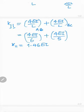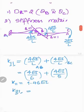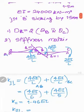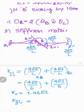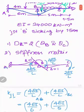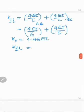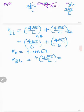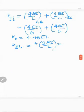K21 is the force induced at coordinate 2 when unit displacement is at coordinate 1. Coordinate 2 is at joint C. The force at C is 2EI/L, clockwise, which matches coordinate 2 direction, so K21 = +2EI/L. Substituting L = 5 meters for span BC gives K21 = 0.4 EI.